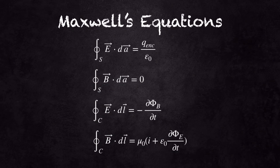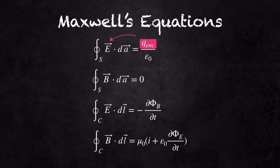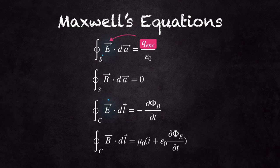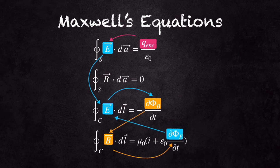In short, an oscillating charge produces time-dependent current. From Maxwell's equations, time-varying current generates time-varying magnetic fields. Finally, it produces electromagnetic fields as a cycle.